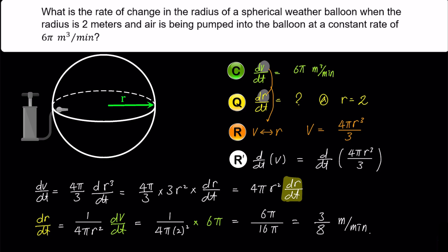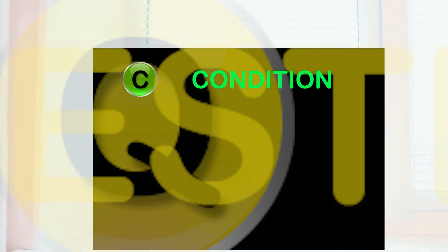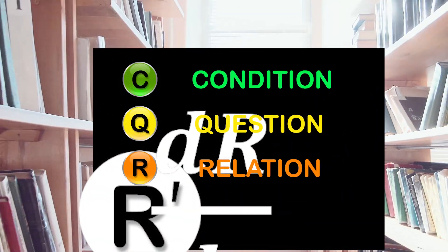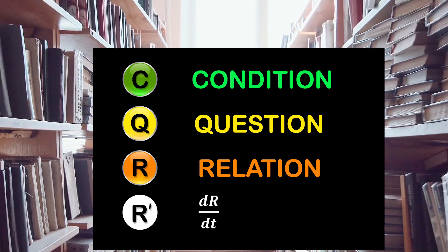So if you can remember these 4 things: condition, question, relation, and relation prime, you can easily solve related rates problems.